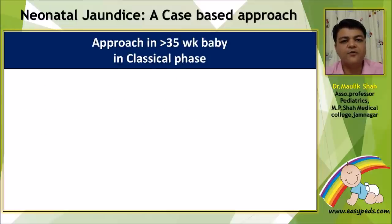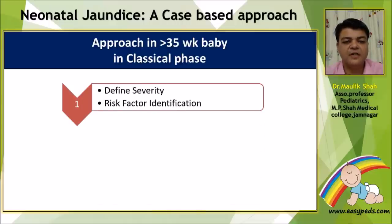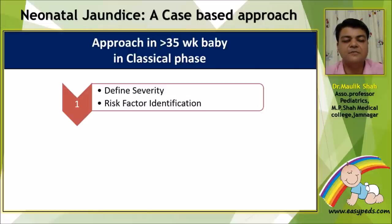When approaching a baby more than 35 weeks gestation — where bilirubin starts rising at day 2 or 3, peaks around day 5 or 6, then drops — the first important step is to define severity using total serum bilirubin or transcutaneous bilirubinometry, and also by clinical means such as Kramer staging. One must also identify risk factors such as RH isoimmunization, ABO isoimmunization, and G6PD status.